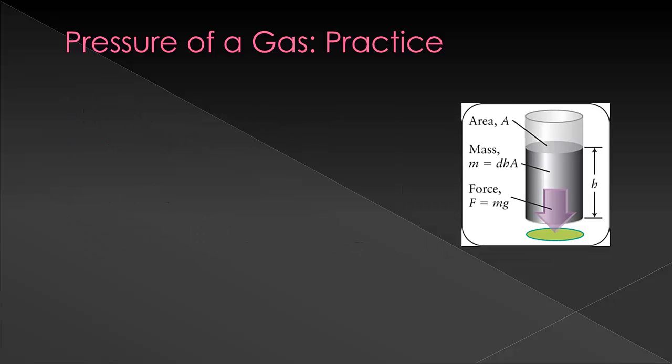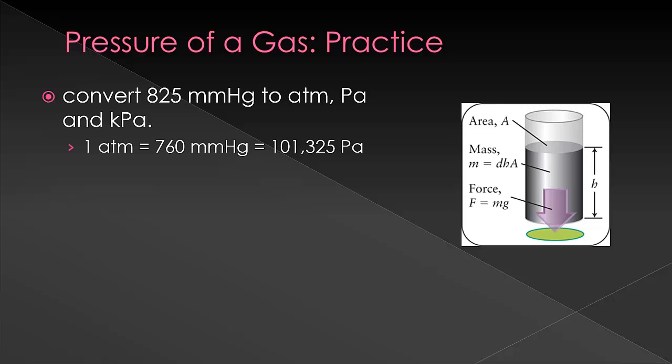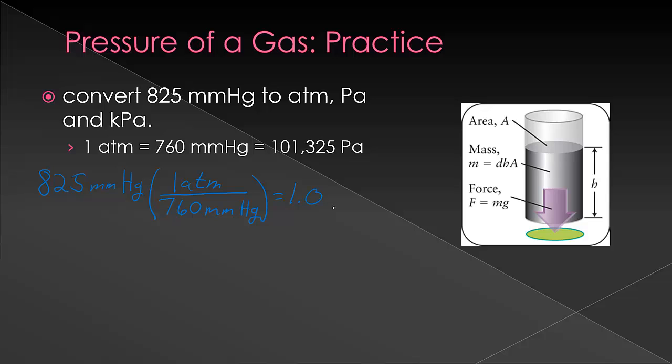So let's get a little bit of practice using these conversion factors. Let's convert 825 millimeters of mercury to atmospheres, pascals, and kilopascals. We'll start with our 825 millimeters of mercury. So when we set up our conversion factor, we'll divide by 760 millimeters of mercury, multiply by our 1 atm, to get 1.08 atm.